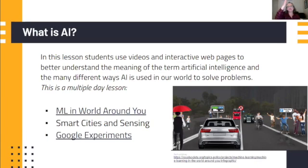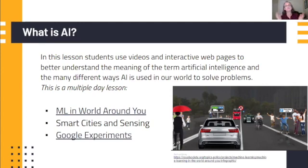There's a 'Machine Learning in the World Around You' resource - they updated the website but it still lets students virtually explore places like a library or police station to see where machine learning is used. Students also investigate smart cities and think about what's important to AI - sensing, sensors, and data. There are videos on smart cities and sensing. Then there's always something fun: Google Experiments. I usually give kids a couple to pick from, but they generally go and try all of them to get a feel for what AI is doing and predicting.